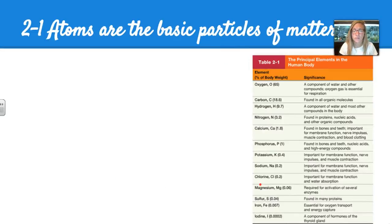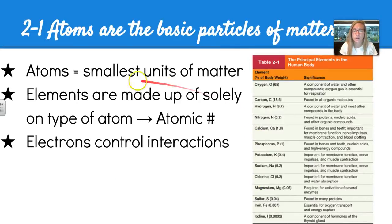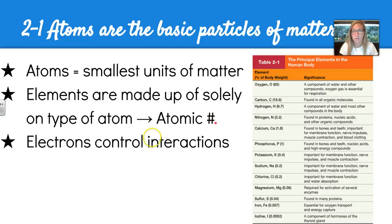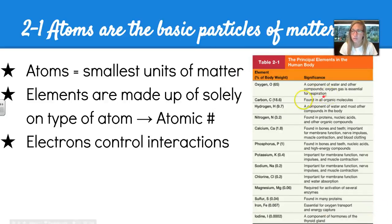Chapter 2 uncovers the fact that atoms are the basic particles of matter — they're the smallest that we concern ourselves with here. Elements are made up of solely one type of atom and are identified by their atomic number. Electrons control their interactions. This table gives you the principal elements in the human body and their significance, and we'll discuss each in more depth in later units.